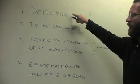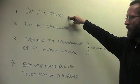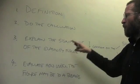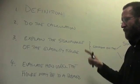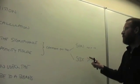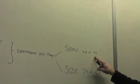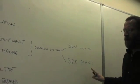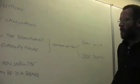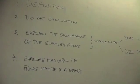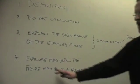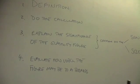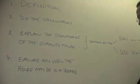First of all, you need to be able to define the elasticity term that is being questioned. Secondly, you must be able to do the calculation. Thirdly, you need to explain what the significance of the number that you have come up with is. And for this, you need to do two things: you need to always comment on the sign, is it positive or negative, and secondly, you need to comment on the size, is the number greater than one or less than one? And finally, once you know what the number is and the significance, you need to say how useful would it be for a business. So you need to evaluate normally. You need to come up with ideas as to why it would be useful for a business, and then you need to know something about the limitations of using these figures for a business.